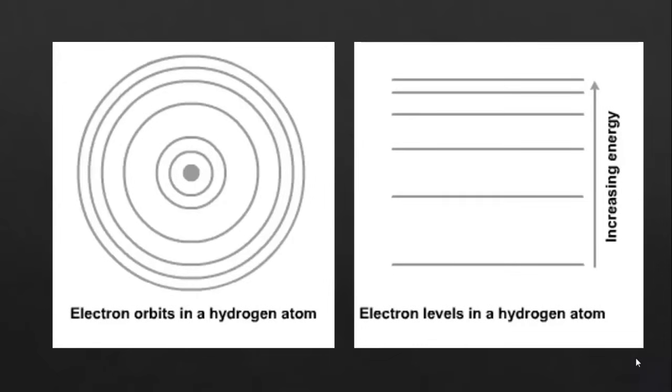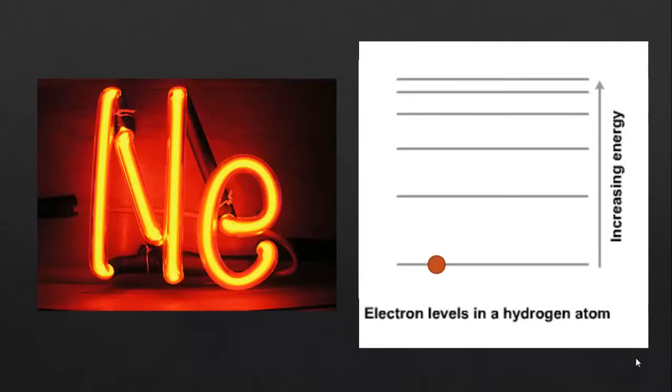When we excite a gas, such as in this neon tube, we are giving energy to the electrons. This means that they will climb up to a higher energy level. Electrons are more stable at lower energy levels, so they will always try to drop back down.